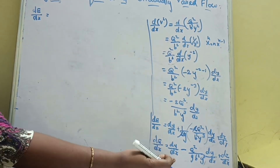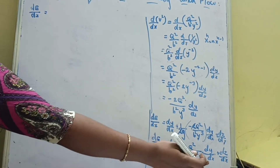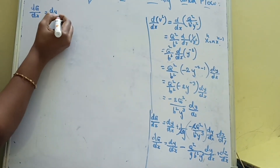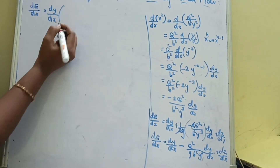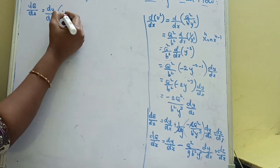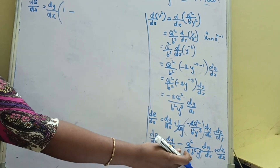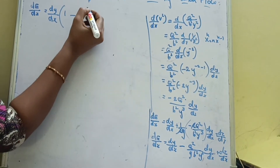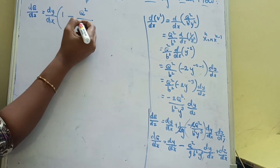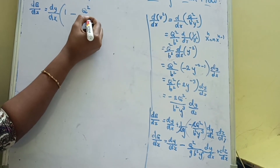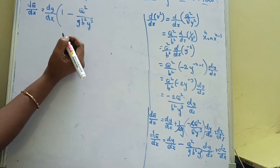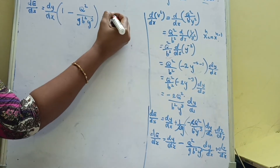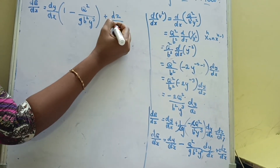Now we simplify this equation. dE/dx equals dy/dx in the first term and dy/dx in the second term, so we take dy/dx as a common factor: dE/dx equals dy/dx times [1 minus Q-squared divided by (g times B-squared times y-cubed)] plus dz/dx.